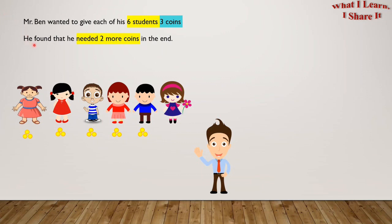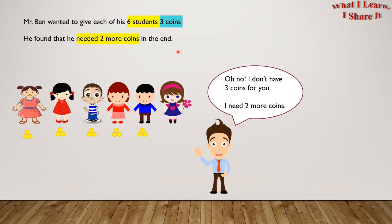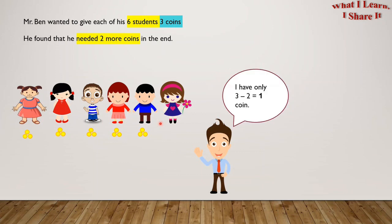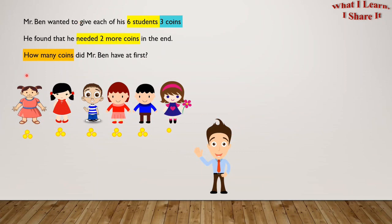He found that he needs two more coins in the end. Oh no, I don't have three coins for you. I need two more coins. How many coins will this girl get? Yes, she will get only one coin. I have only three minus two equals one coin. So here is her one coin. How many coins did Mr. Ben have at first? Let's see the possible strategies to solve this problem.